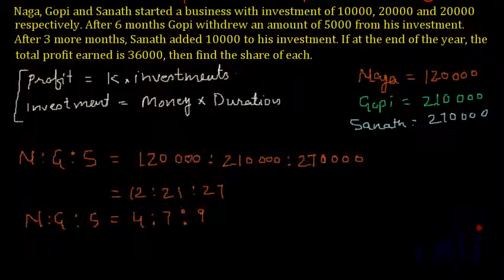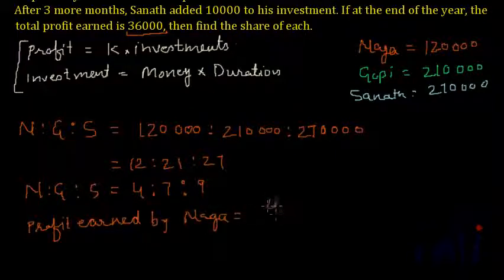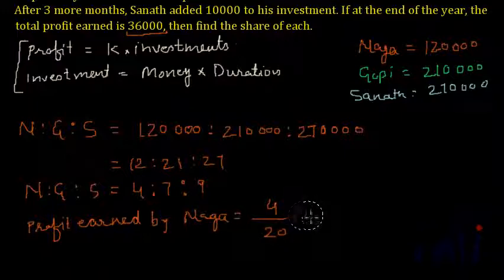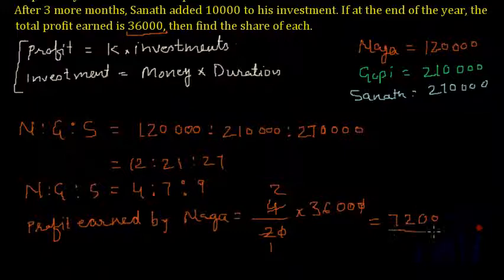The total profit is 36,000. The profit earned by Naga will be 4 parts out of a total of 4 plus 7 plus 9, which is 20 parts. So Naga's profit is (4/20) multiplied by 36,000, which equals 7,200.